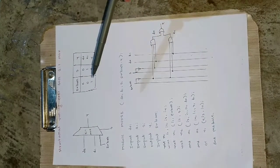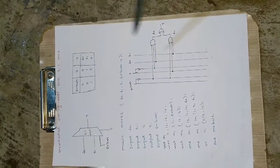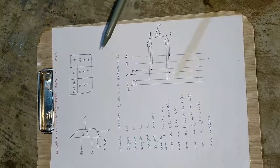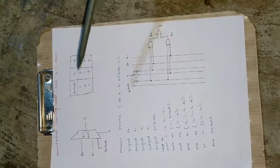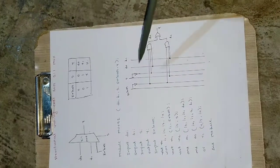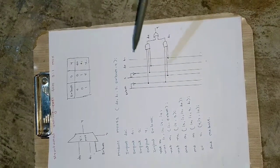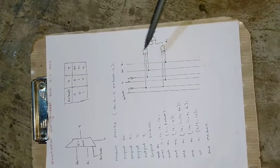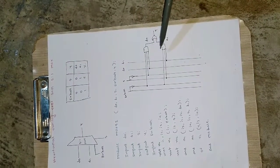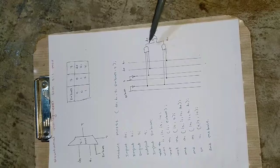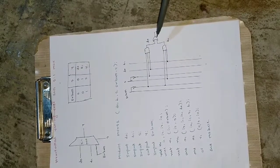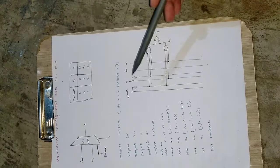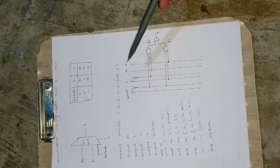Coming to the structural diagram: if you are writing structural code, you can't work with just a block diagram — you need the gate implementation for the design. This is the block diagram and this is the gate implementation. What is inside the block is the internal diagram showing AND gates and NOT gates connected to each other.